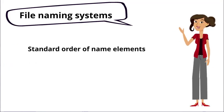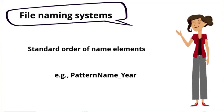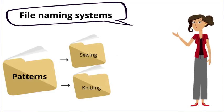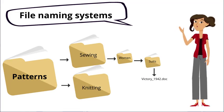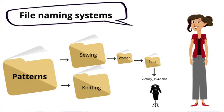Next, establish a standard order of elements that every file name will follow, such as pattern name underscore year, and then save your files in the appropriate folder. So, if you did create a subfolder for suits in the women's sewing patterns folder, you won't need to wonder what victory_1942 is. It's instantly obvious what sort of pattern it is by virtue of where you saved it. Clear and simple.